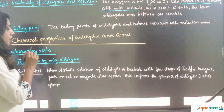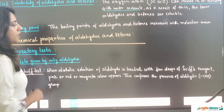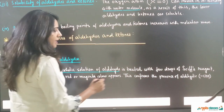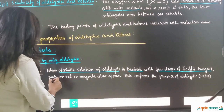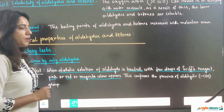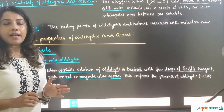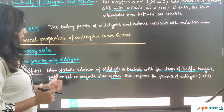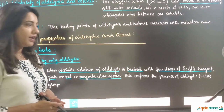The first laboratory test is for aldehydes only. The first test is Schiff's test. When an alcoholic solution of an aldehyde is treated with a few drops of Schiff's reagent, we see a pink, red, or magenta coloration. This confirms the presence of an aldehyde group.